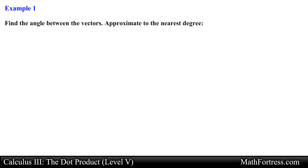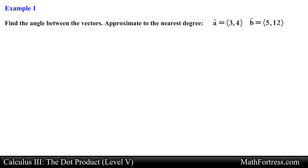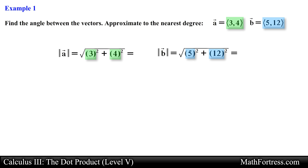Find the angle between the vectors, approximate to the nearest degree. Here we have two planar vectors and we are asked to find the angle between these two vectors. Keep in mind that the angle between the vectors will always be an angle between 0 degrees and 90 degrees, an acute angle. Let's start by finding the magnitudes of each planar vector, using each vector's components substituted into the magnitude formula. Simplifying, we obtain the magnitudes of vector A and vector B.